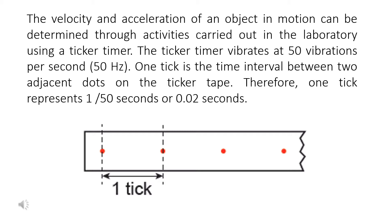One tick is the time interval between two adjacent dots on the ticker tape. Therefore, one tick represents 1/50 seconds, or 0.02 seconds.